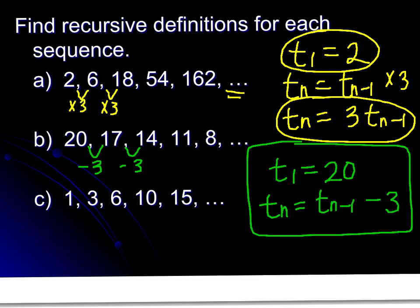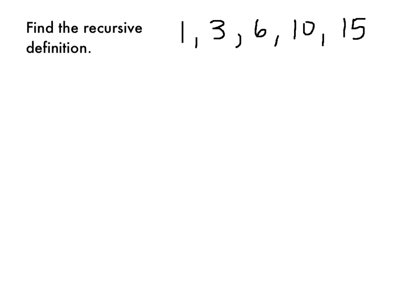This example is definitely more complicated, but we want to take the same strategy. We're looking for a pattern. Here we have a plus 2, then a plus 3, then a plus 4, then a plus 5. So we don't have a consistent pattern, but we are adding one more each time. So to start our definition, we're going to write t sub 1 equals 1. We always want to define that first piece.